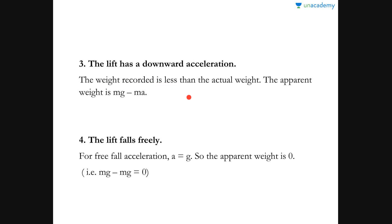The third case: the lift has a downward acceleration. If the lift has a downward acceleration, it acts in the direction of gravity. Therefore, the weight recorded by the spring balance will be less than the actual weight. The apparent weight in this case is mg − ma, the difference between the gravitational force and the force due to the downward acceleration.